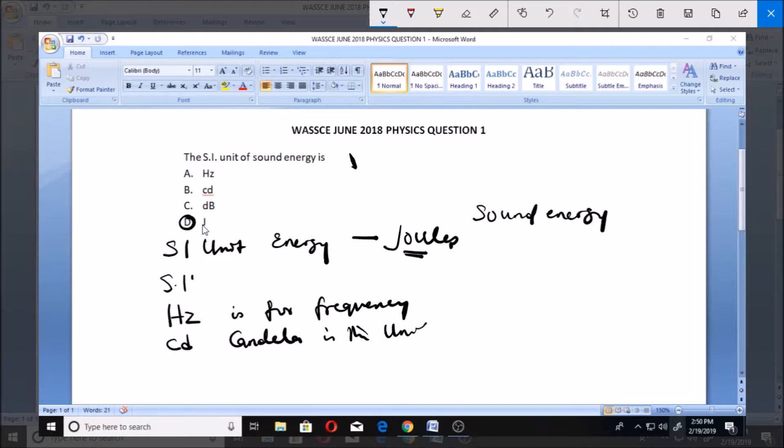is the unit for luminous intensity. In case you see the question in another form, that's what CD is for.